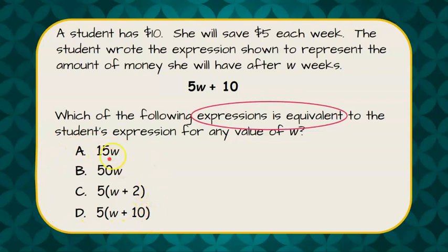The first one is 15W. That would be true if there was a W after the 10, but these are not like terms. We have a variable term and a constant term, and they cannot be combined. This is actually in simplest form. So it cannot be that.